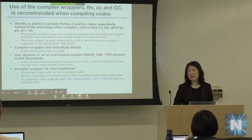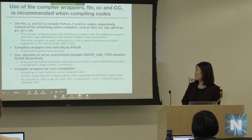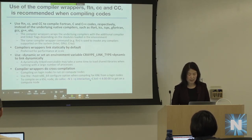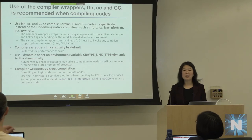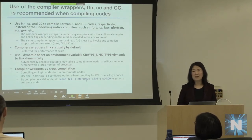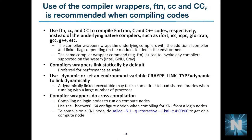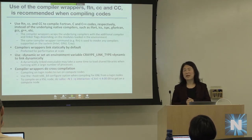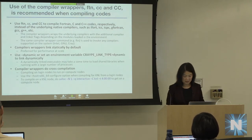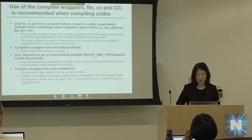Sometimes you may need to compile directly on the compute node. In that case I recommend using the interactive QoS — Helen will talk more about how to run jobs — but basically this is a high-priority queue where in about five minutes you either get a node or the submission is cancelled. One note: KNL is pretty slow; the clock speed is almost half of Haswell. So unless you have to, usually compile on login nodes.